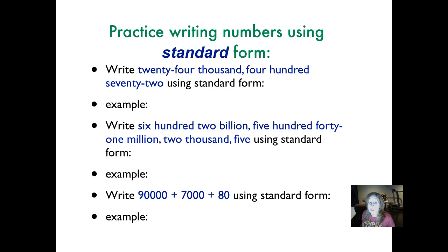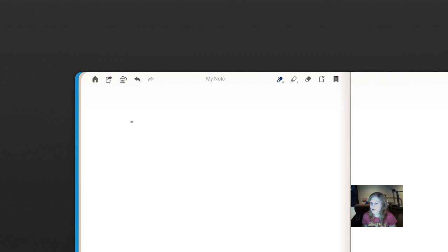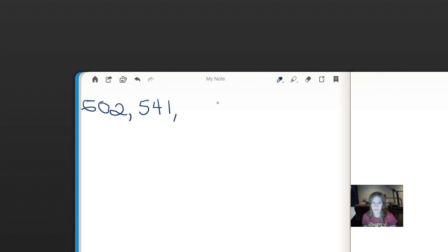Okay, now write 602,541,002,005 using standard form. Okay, let's check our next example. We're writing 602,541,002,005 using standard form.